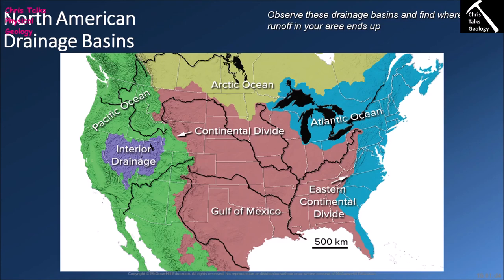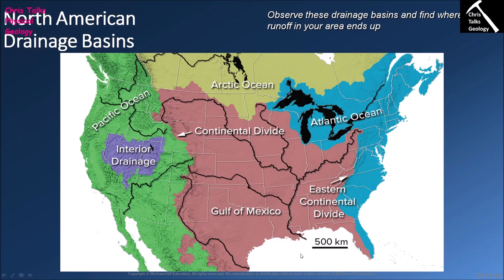In terms of North American drainage basins, there are in theory five of them. The most famous boundary is the Continental Divide, which runs along the Rocky Mountains. The Continental Divide is the boundary where water on the western side flows into the Pacific and water on the eastern side flows into the Atlantic or the Arctic. The area marked in red in the center is the Gulf of Mexico drainage basin, where water is collected into major rivers — most famously the Mississippi, along with the Ohio and Missouri — and moved down into the Gulf of Mexico.